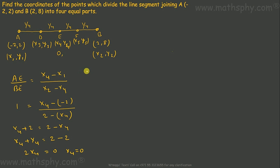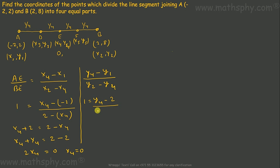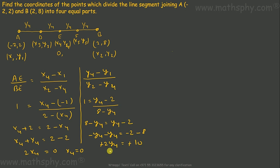Now let's find Y4. Using the same approach: 1 equals (Y4 minus Y1) over (Y2 minus Y4), where Y1 is 2 and Y2 is 8. So 8 minus Y4 equals Y4 minus 2, giving minus 2Y4 equals minus 10, so Y4 equals 5. Therefore point E is at coordinates (0, 5).